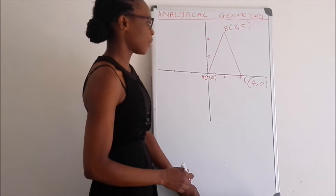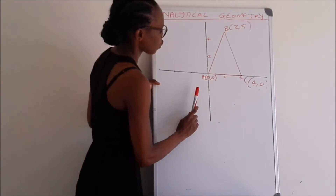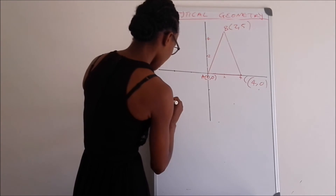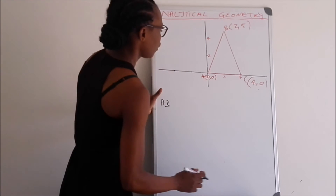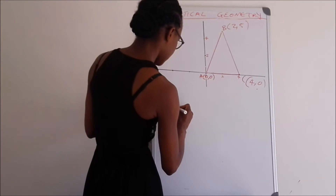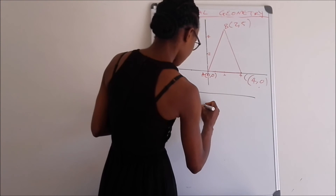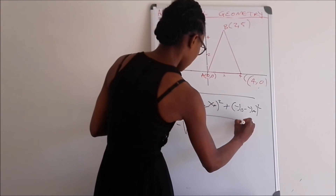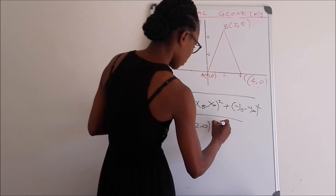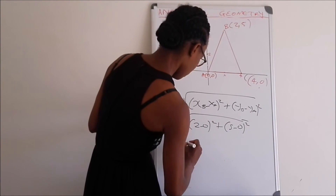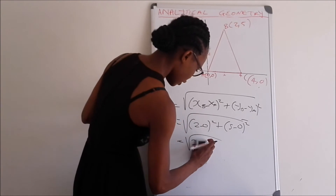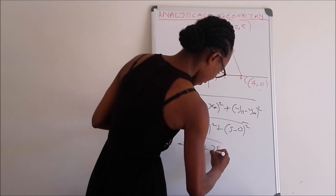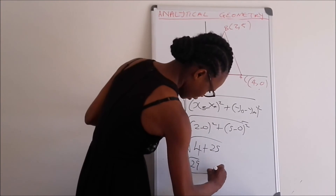We must find the distance between AB, BC, and AC. The distance formula is: √((x_B − x_A)² + (y_B − y_A)²). For AB: √((2 − 0)² + (5 − 0)²) = √(4 + 25) = √29. So the distance AB equals √29.